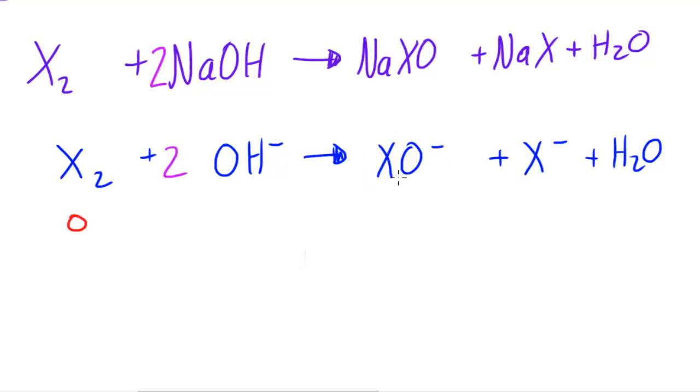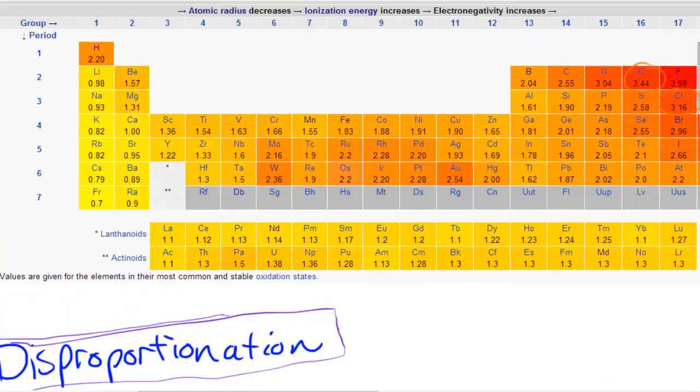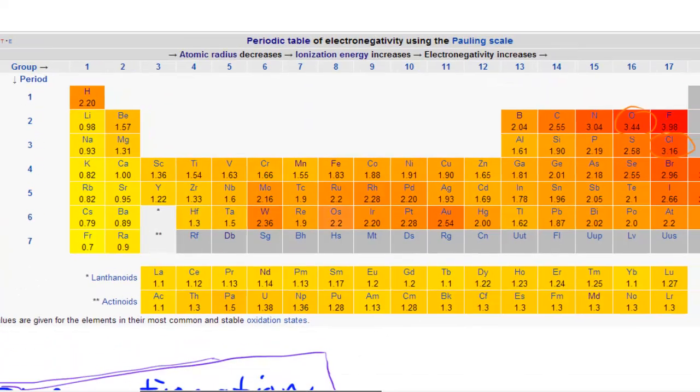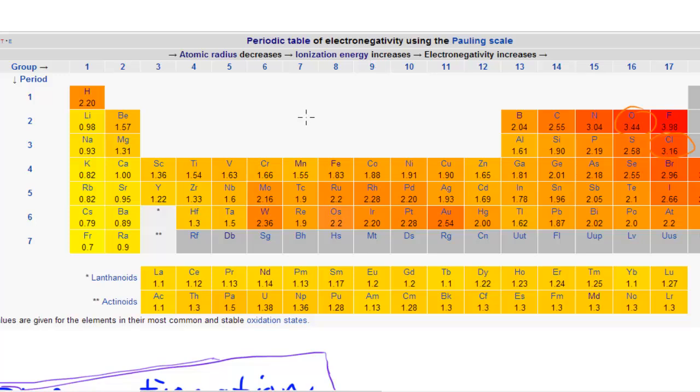since it's bonded to oxygen and this particular reaction represents any given halogen except for fluorine. If we take a look at this table I've got here, this shows the Pauling scale of electronegativities and a higher number means more electronegative. So if we look here, fluorine is more electronegative than oxygen but all of the other halogens are less electronegative than oxygen.